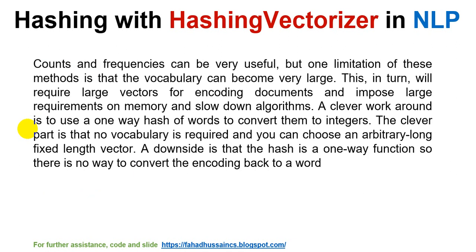The count and frequency approach can be very useful, but one limitation is that the vocabulary can become very large. When we have a document with a frequency count, the complete vocabulary data can be very large. This will require large vectors for encoding documents and impose large memory requirements, which will slow down the algorithm.